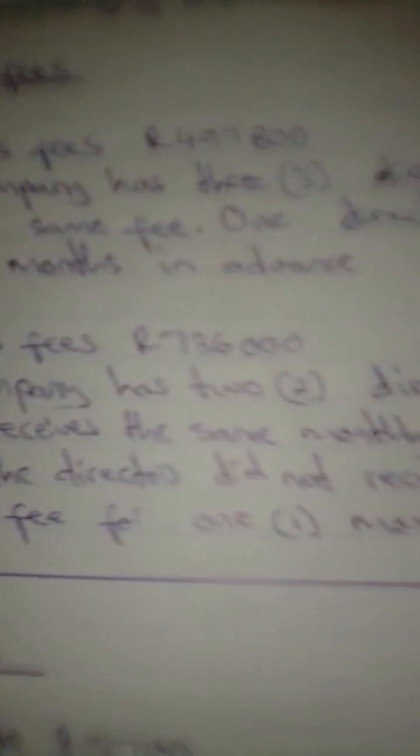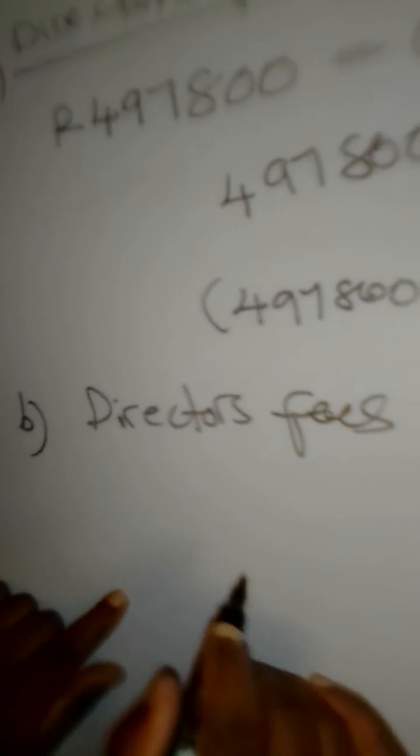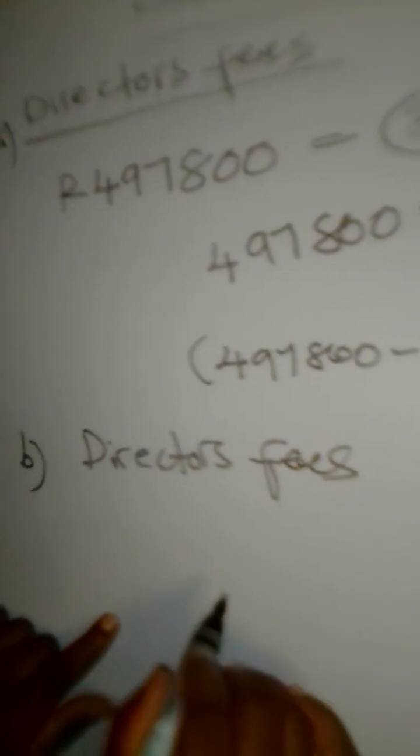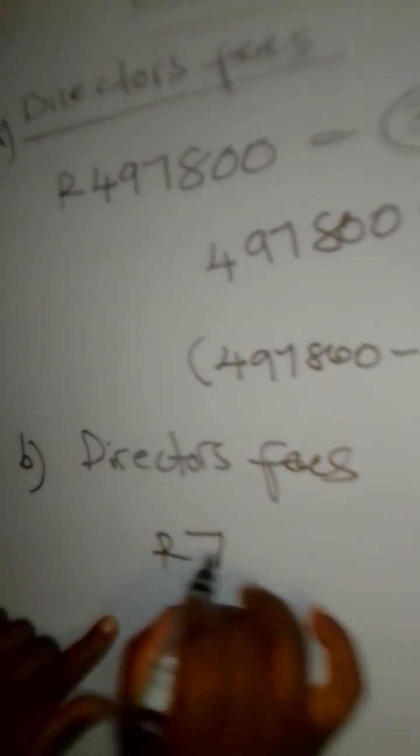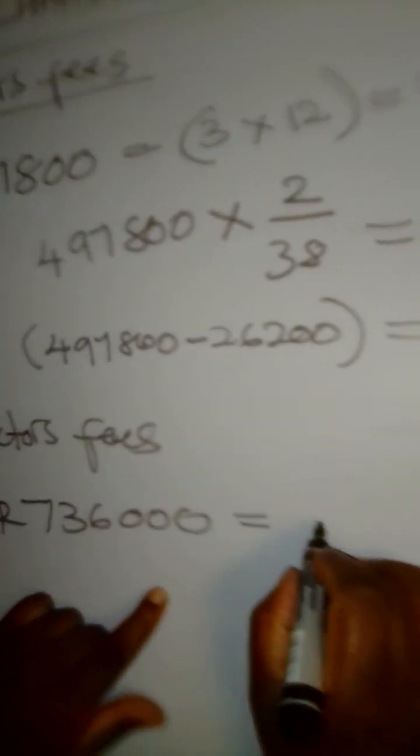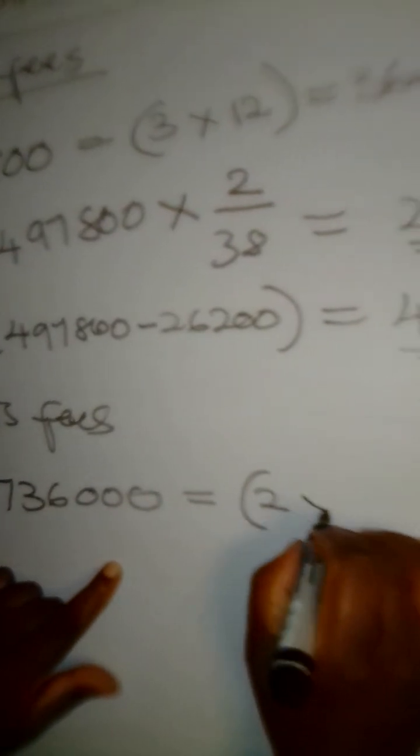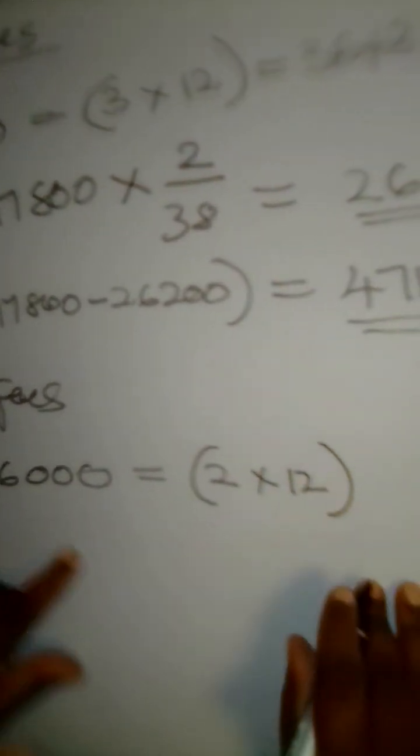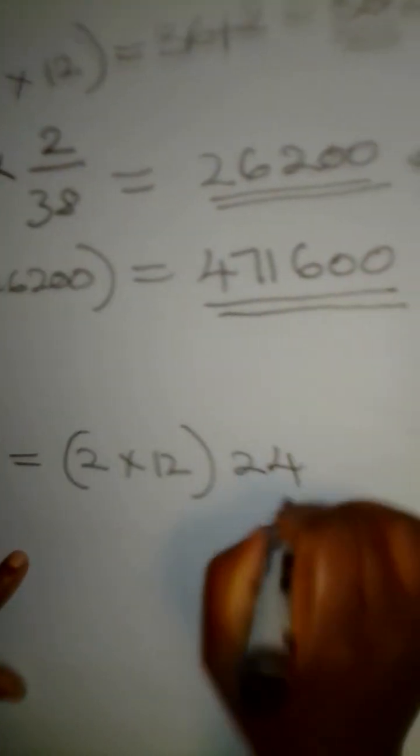Director's fees for part B. The amount that is given there is $736,000. It's for how many directors? It's going to two directors times 12 months. We know that it will give us 24 months.